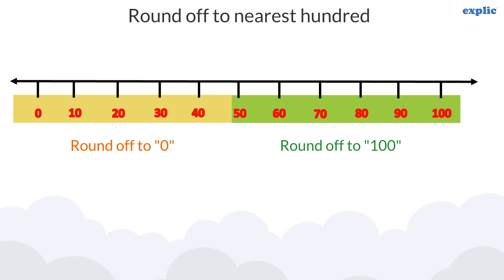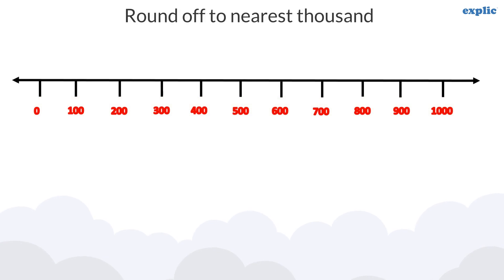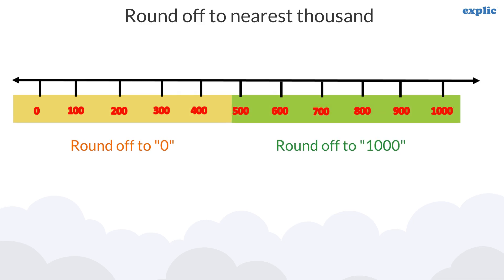To round off the number to the nearest thousand, draw the number line from 0 to 1000. If the number is between 0 to less than 500, the nearest thousand is 0. And if the number is between 500 to 1000, the nearest thousand is 1000.